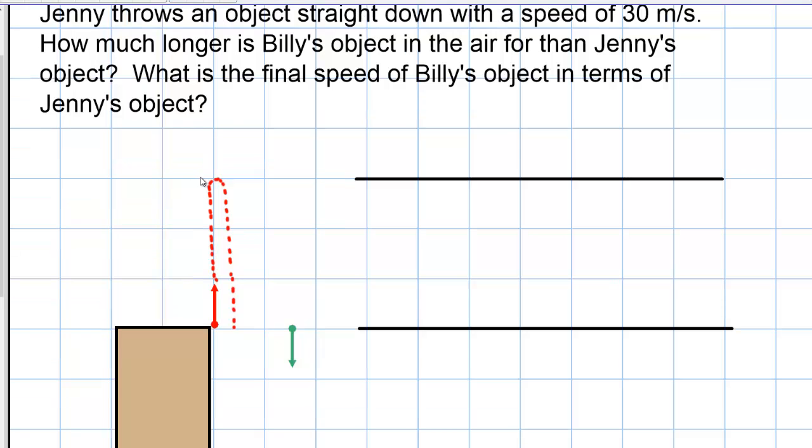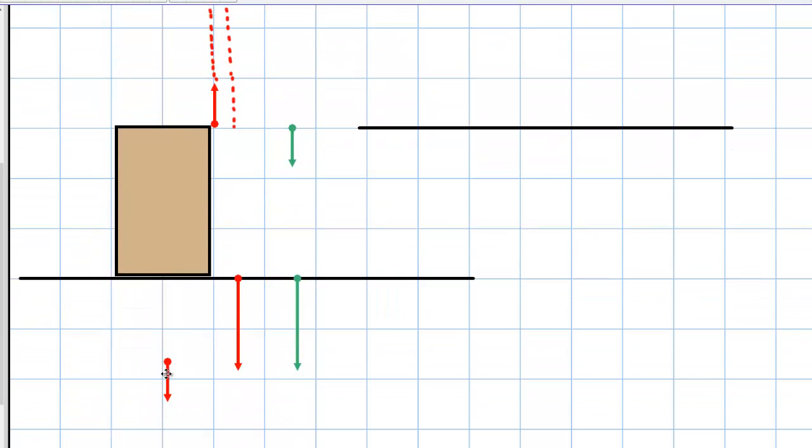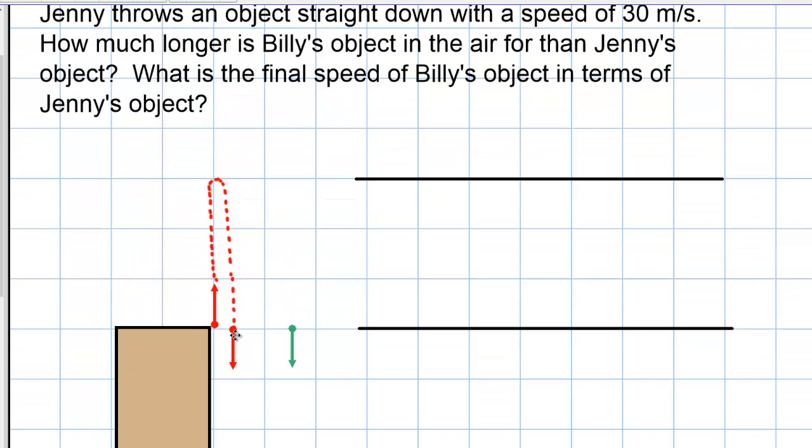So, what's the difference here? Well, we need to talk about symmetry. And we need to know that Billy's initial speed and final speed are the same at this point when it comes back to its initial height. So, that's a clue. So, from this point forward, it's an identical problem. They happen at different sections of time, but when Billy's object comes back here, it's the same as Jenny throwing it down at 30. So, let's just clarify that.